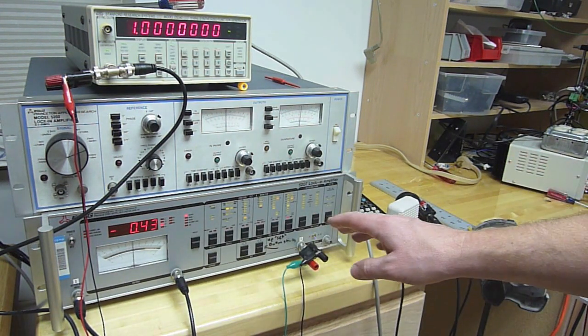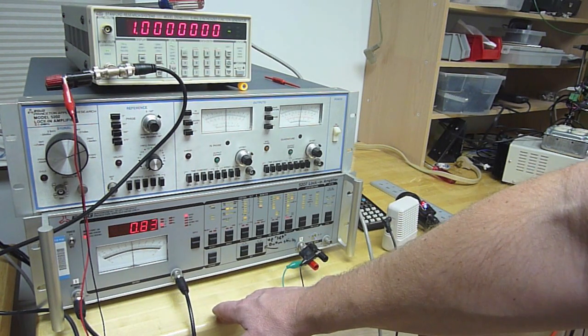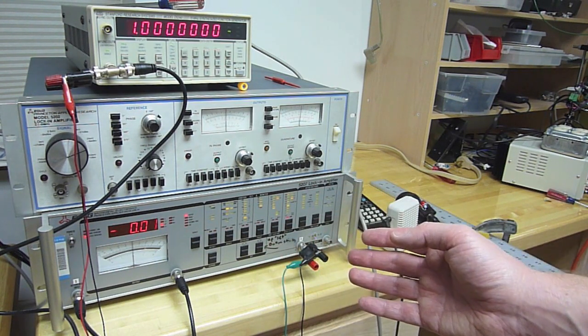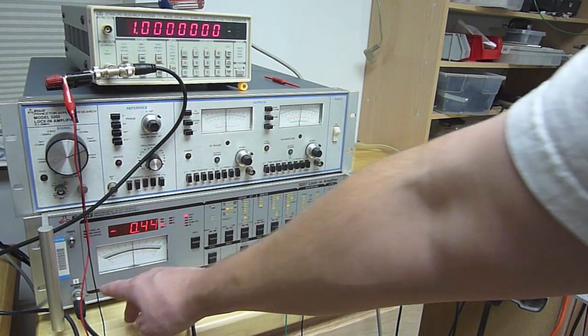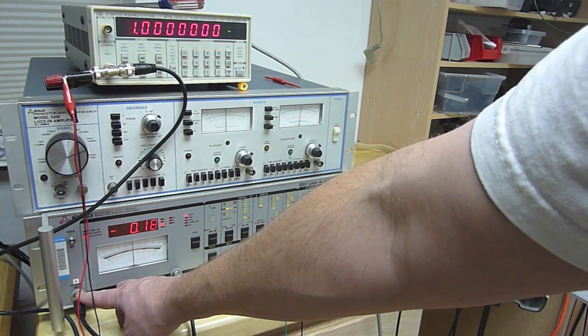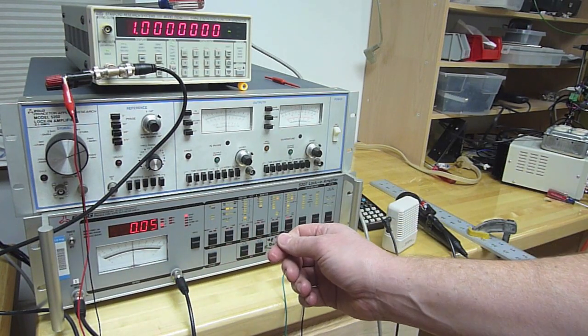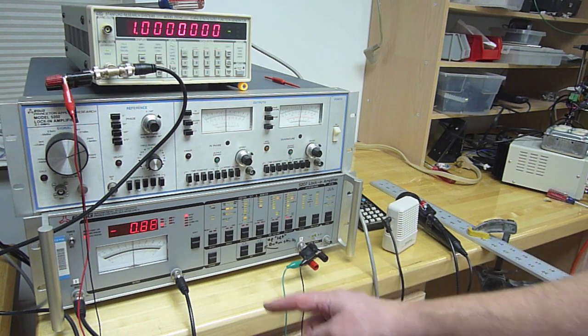What a lock-in really is, is a mixer followed by a low-pass filter bank. When you mix two signals, you get the sum and difference frequency. In this case, the microphone is picking up the same frequency as the reference input, so the difference frequency is zero. That's a DC voltage. The only thing that's different between these two signals is their magnitude and their phase.